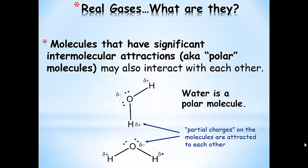Some molecules have significant intermolecular attractions. There are molecules that have areas of partial positive and partial negative charge — we call these polar molecules. These are electrostatically attracted to each other, similar to ionic compounds, except we're just dealing with areas of a little bit of excess positive charge and a little bit of excess negative charge. These partial charges with opposite sign are attracted to each other, which introduces potential energy into the equation.